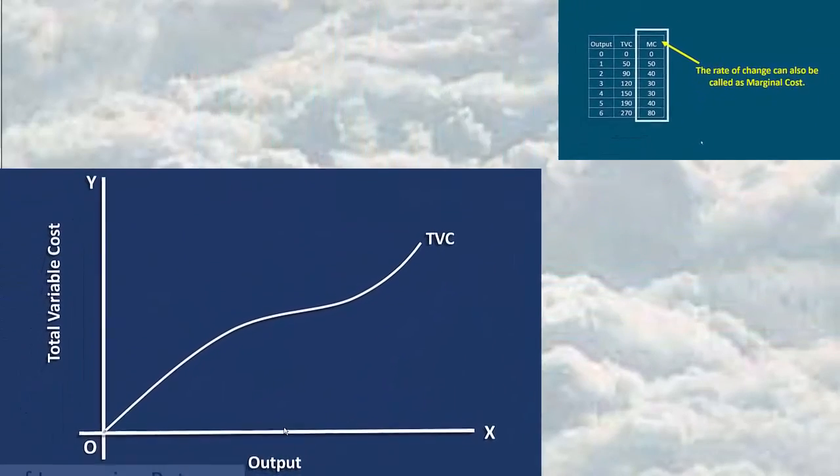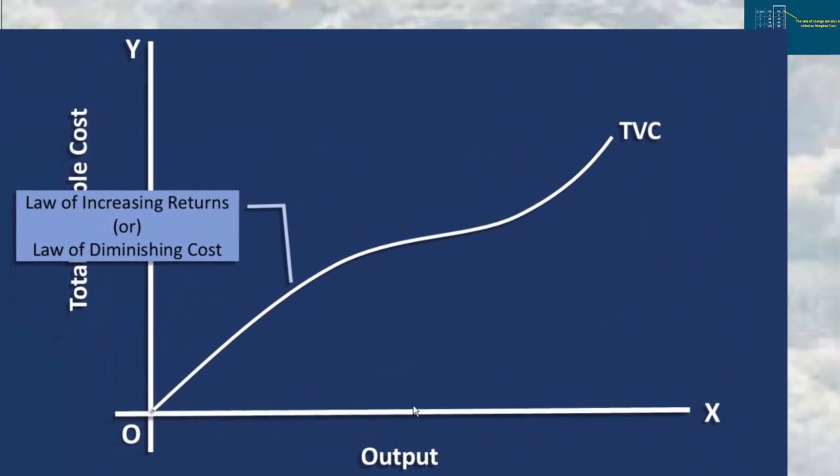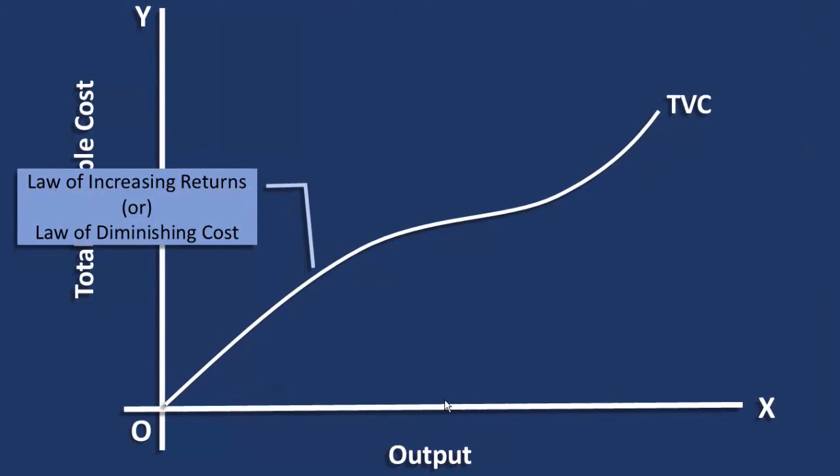The total variable cost curve is concave downwards because the total variable cost is increasing at a decreasing rate. In this segment, the law of increasing returns or law of diminishing cost operates.